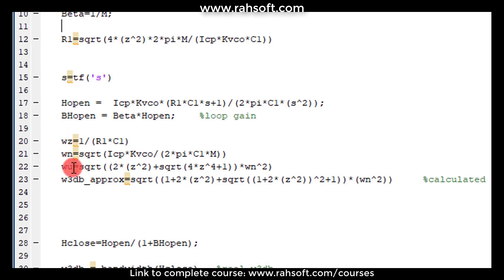So the zero, the omega n, omega u and also 3 dB. I'm calling this approach, actually let's call this calc, the one that we calculated.